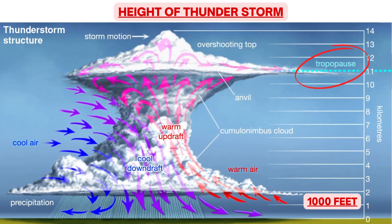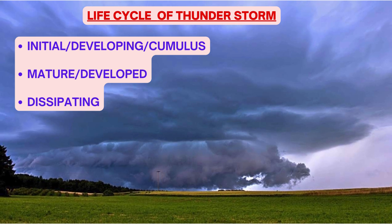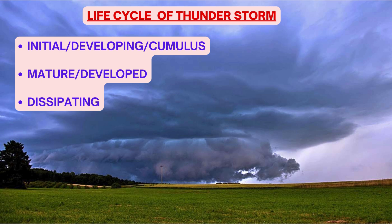The base of a severe thunderstorm can be as low as 1,000 feet, while the top of a large CB cell can reach up to the tropopause and occasionally even into the stratosphere. A thunderstorm follows a typical life cycle with three stages: first is the initial developing or building stage, second is the mature or developed stage, and the last is the dissipating stage.